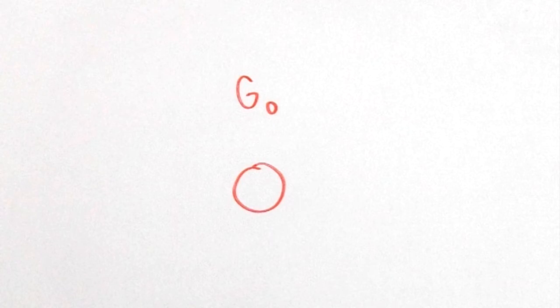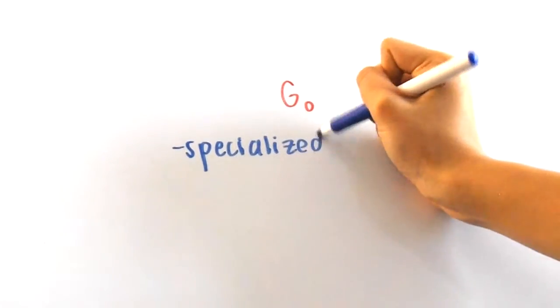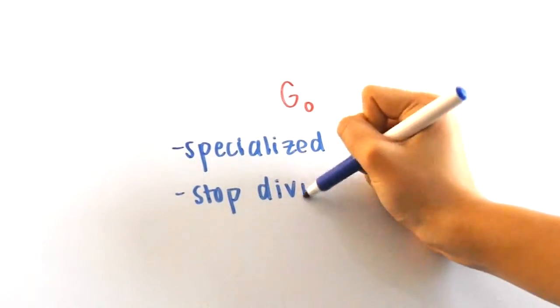In addition, there is another phase called the G0 phase in which the cell does not grow or prepare to divide in any way. A lot of highly specialized cells, when they're fully developed, enter the G0 phase like neurons. They simply stop dividing.